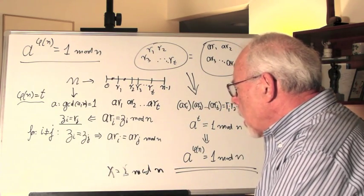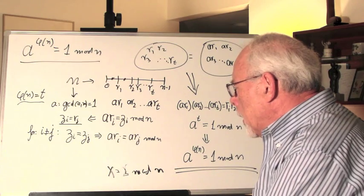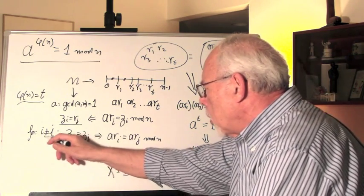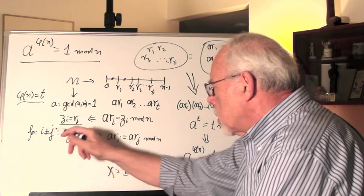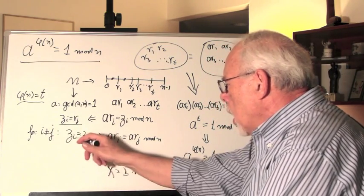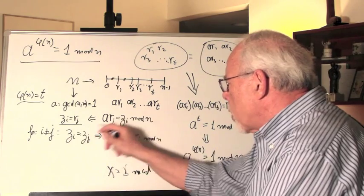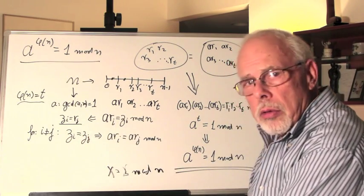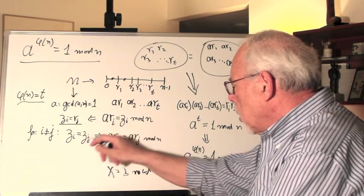And then Euler asks himself, what happens if I compare for i not equal to j? Is it possible that two of those residues will be of same value? Could zi equal zj?